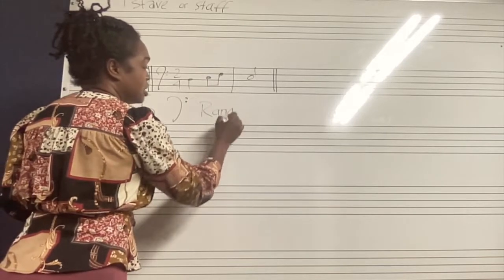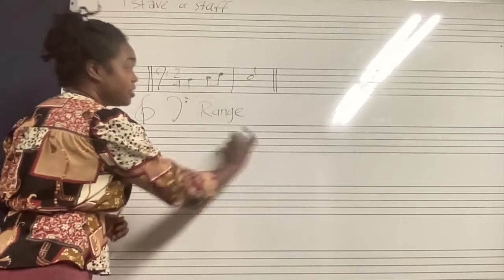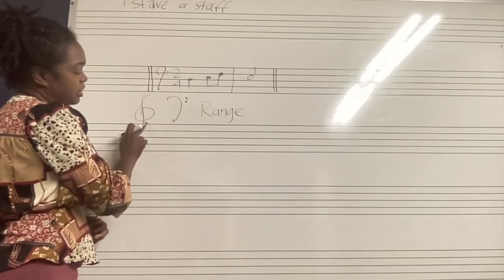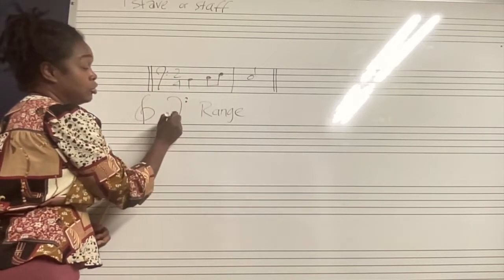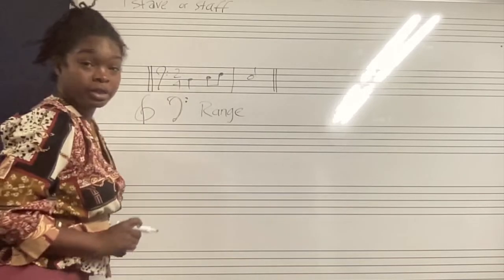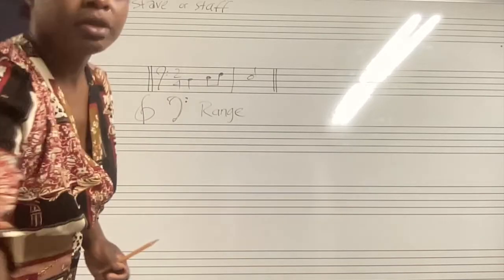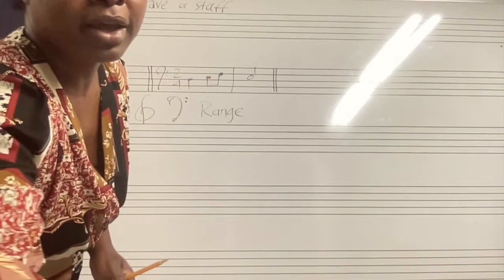can be reflected on the staff by either putting that, which tells us it's going to be in the higher range, or this, like a tuba or bass or cello, in the lower range. Okay, so we got that so far.